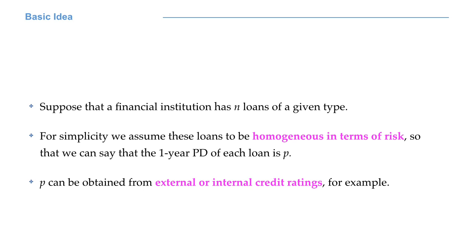Suppose that a financial institution has N loans of a given type. For simplicity we will consider these loans to be homogeneous in terms of risk. So we can say that the one-year probability of default of each loan is P. In other terms it is like we are considering all the loans to be part of the same rating class, say triple B.